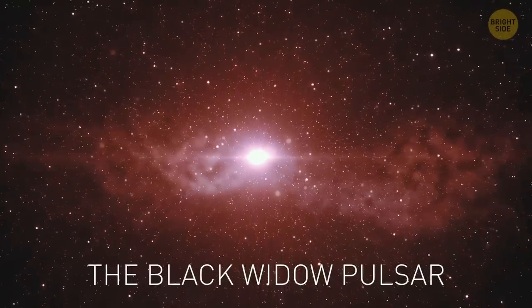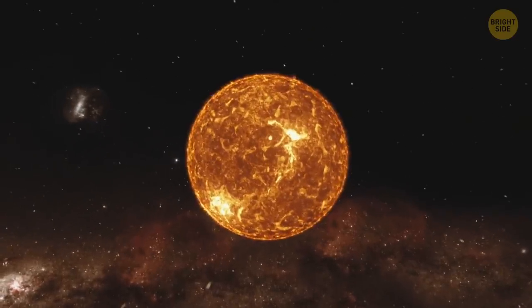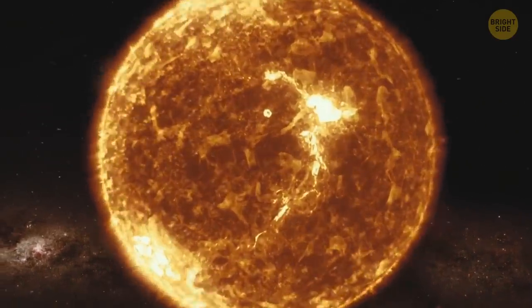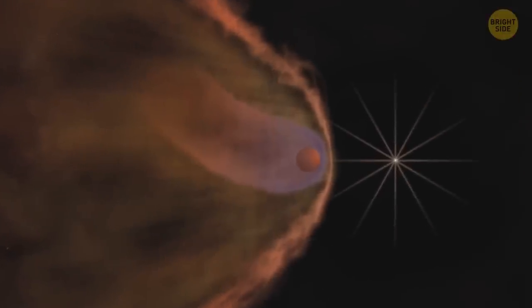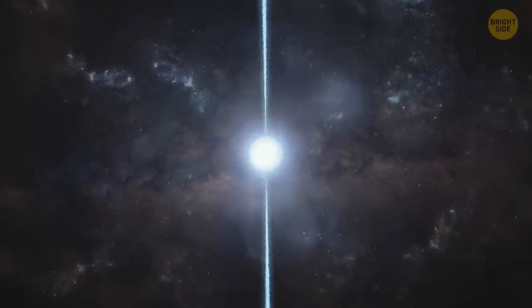The Black Widow Pulsar is a rotating neutron star that is munching on its partner, which is a lightweight brown dwarf star. The more material the pulsar consumes, the more slowly it spins. The energy the neutron star is losing in the process causes the companion star to dwindle.